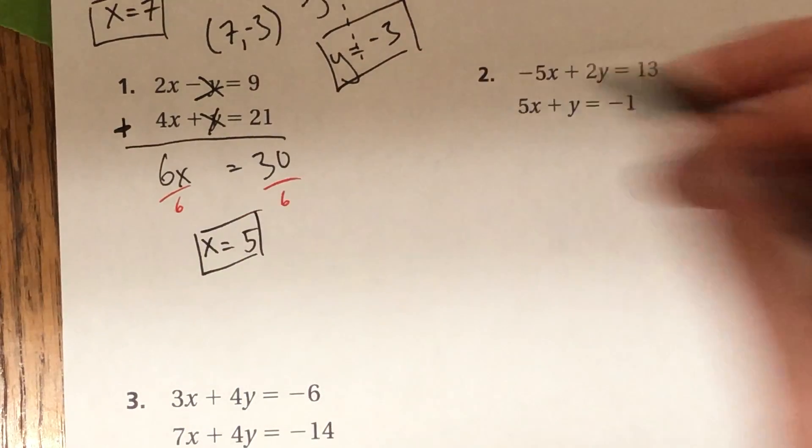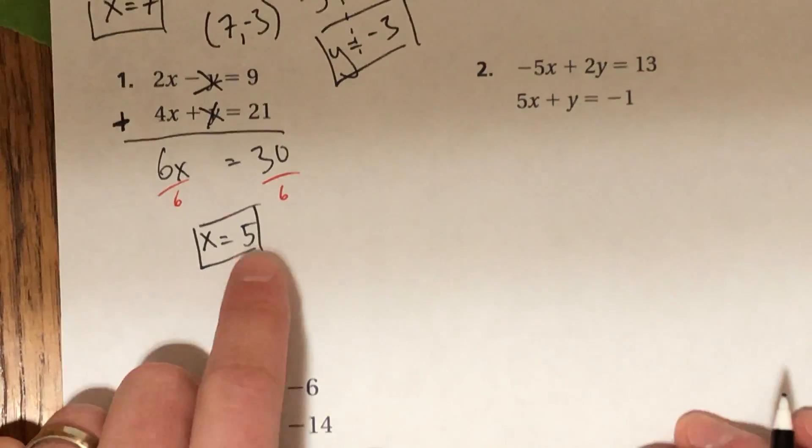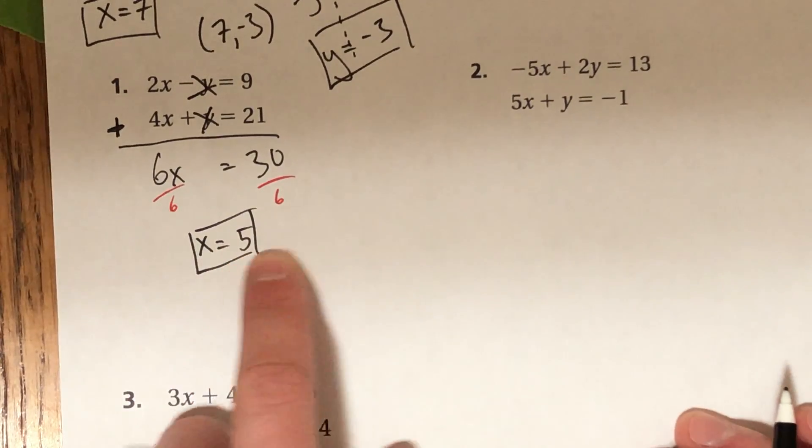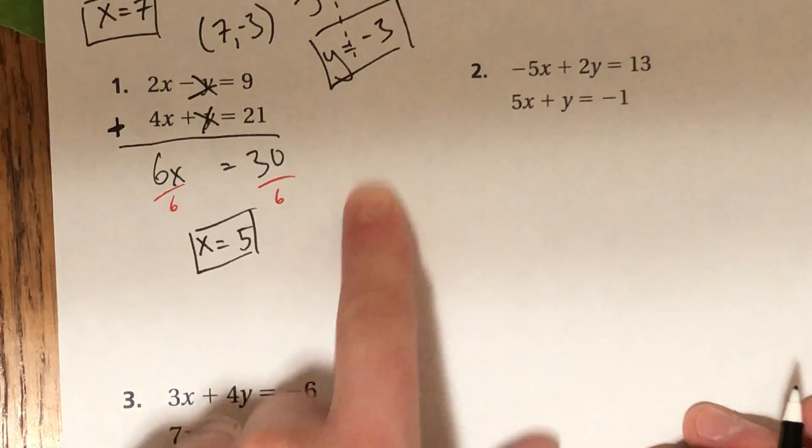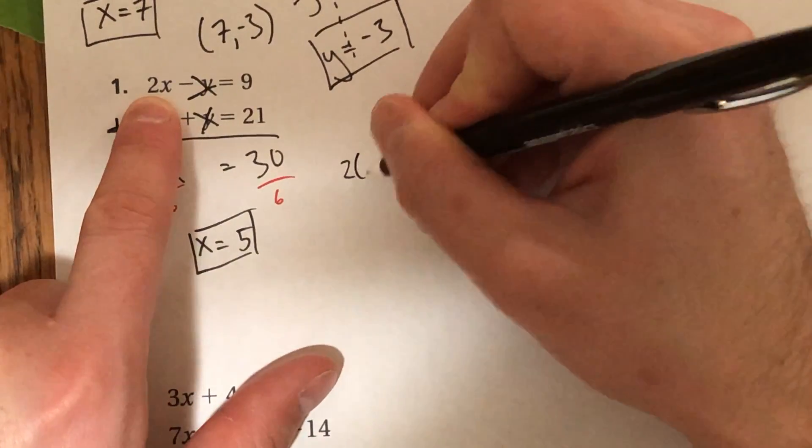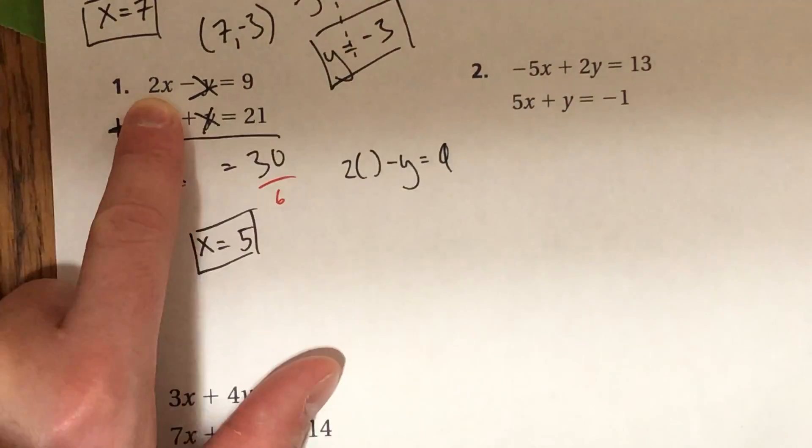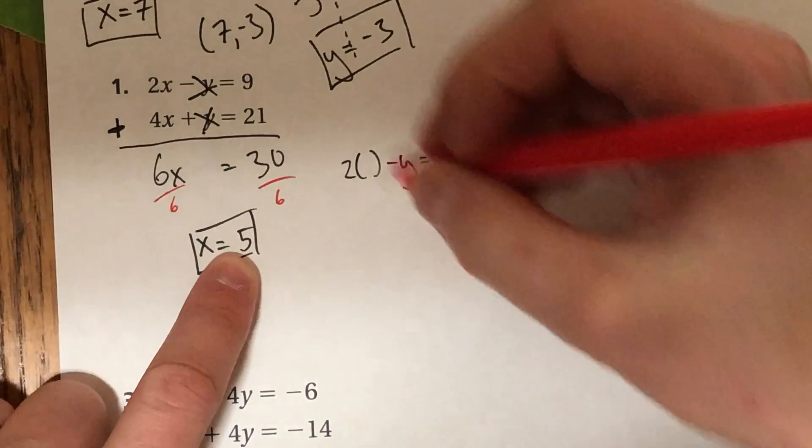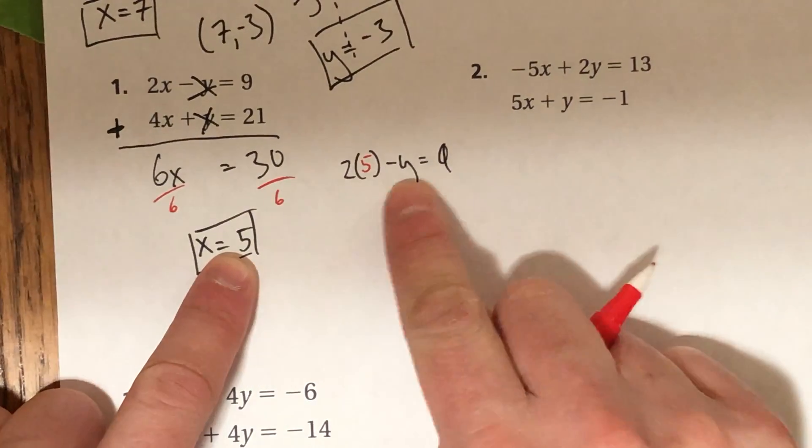And x is equal to 5. And there it is. There's half of my solution. Now to get the other half, I need to plug in or substitute this value back into one of my original equations. So I'm going to go ahead and do that right here in the space that I have. So I have 2x minus y equals 9. But now I know that x is 5. So I'm going to make that substitution. 2 times 5 minus y equals 9.